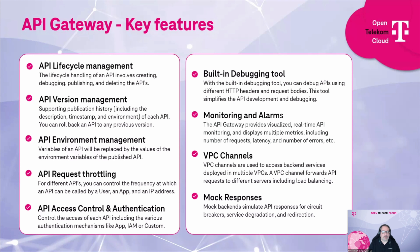All these activities are possible with our API Gateway. Next to that, we can have multiple environments for APIs, define request throttling policies, and access and authentication settings for all these APIs. There are also important tools like a debugging tool, monitoring, and — very importantly — VPC channels, which define how we connect our backend systems running on the Open Telekom Cloud.